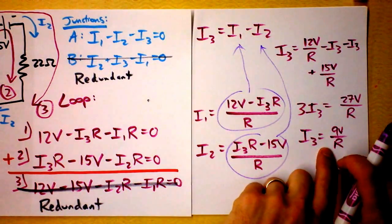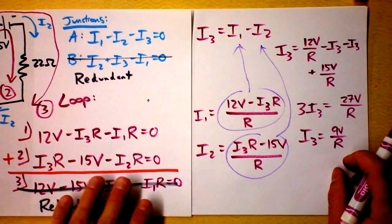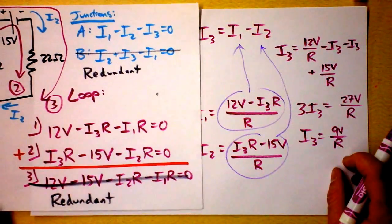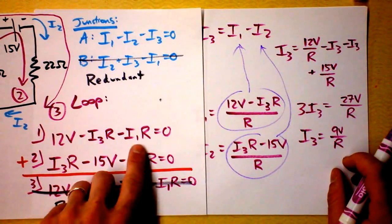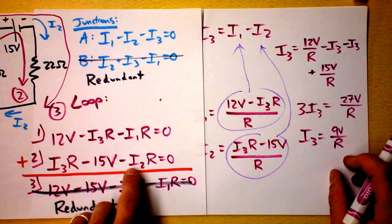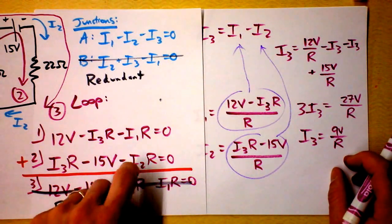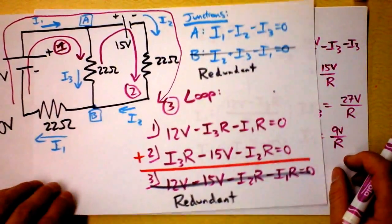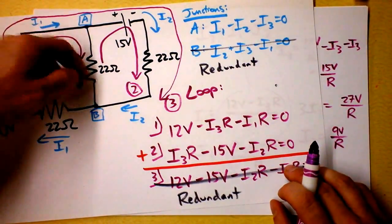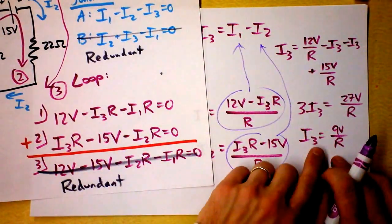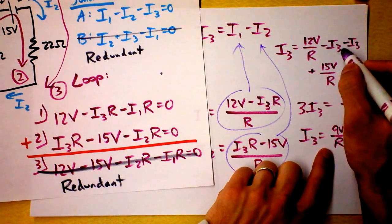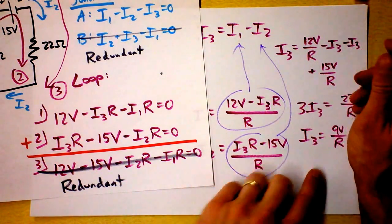Then you can take this and you can plug it back into, where do you want to go? You've got your I3 now, so you can go to this equation and solve for I1. And you can go to this equation and solve for I2. Then you'll know all the currents. But what we did just find is that the current is going this direction because I3 is a positive number. Assuming I didn't make a mistake with these guys right here. Boy, I hope I didn't.